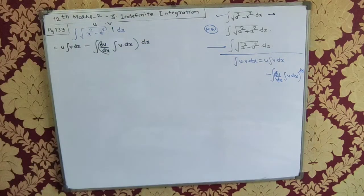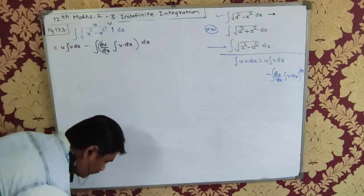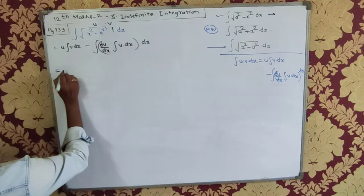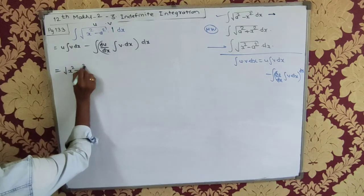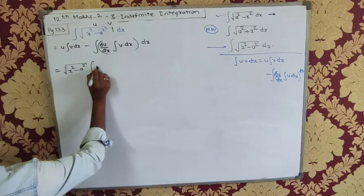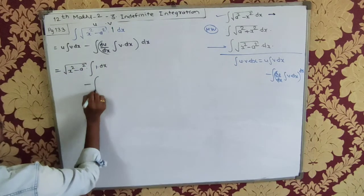Okay? Now that is equal to, let me substitute here now. This will give me u, so √(x² - a²) ∫1 dx minus the integral.